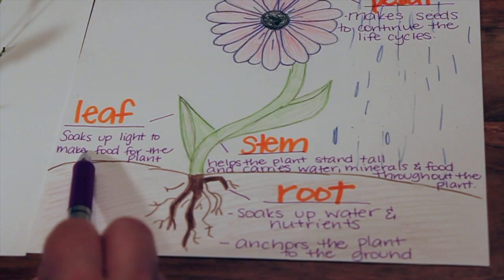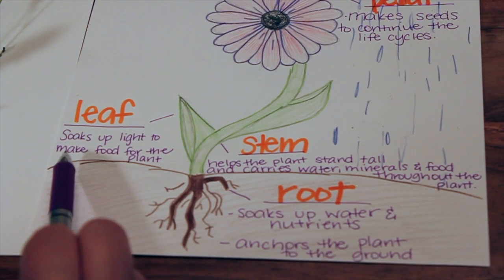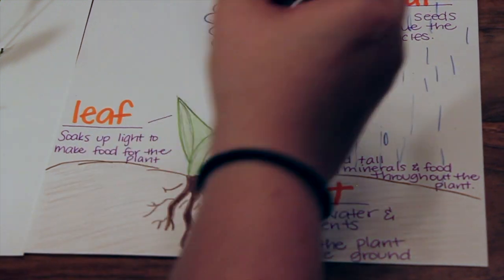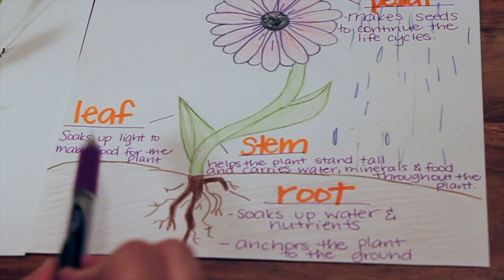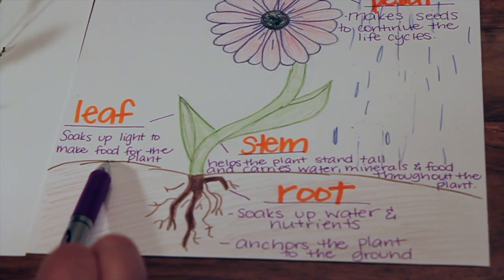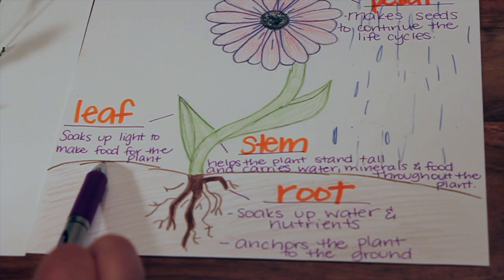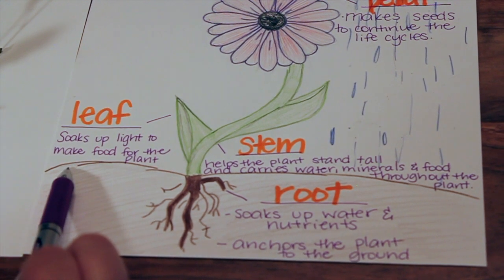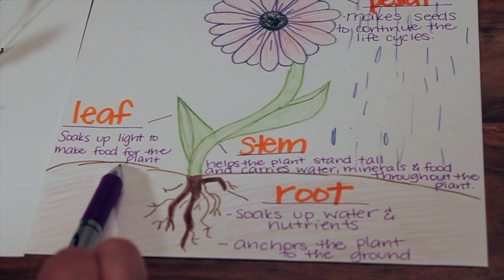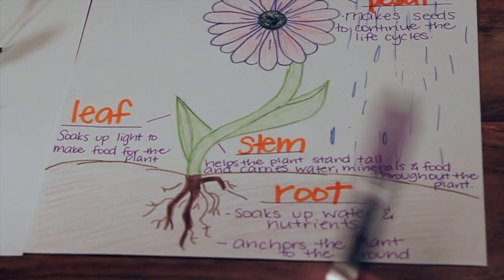The next one is the leaf. The leaf soaks up light to make food for the plant. As the sun shines down, the leaf is responsible for soaking up that light. All plants need light to make food.